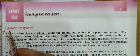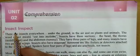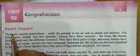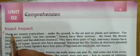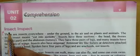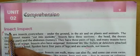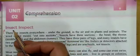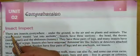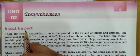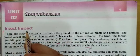Let's start with the title: 'Insect Inspect.' First of all, you must know the meaning of these words. 'Insect' means — for example, bugs, ants, flies, bees — these kinds of things are called insects. And 'inspect' means to check or to examine.